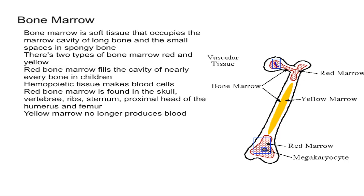Let's first talk about red marrow. Red marrow fills the marrow cavity of nearly every bone in children. Additionally, red marrow contains stem cells — there are two types of stem cells in red marrow.